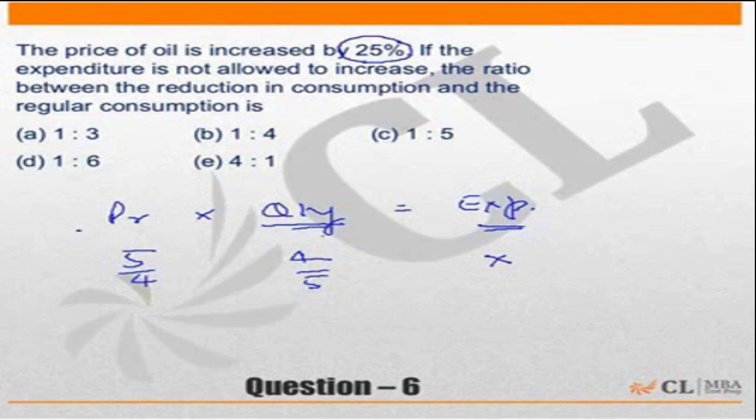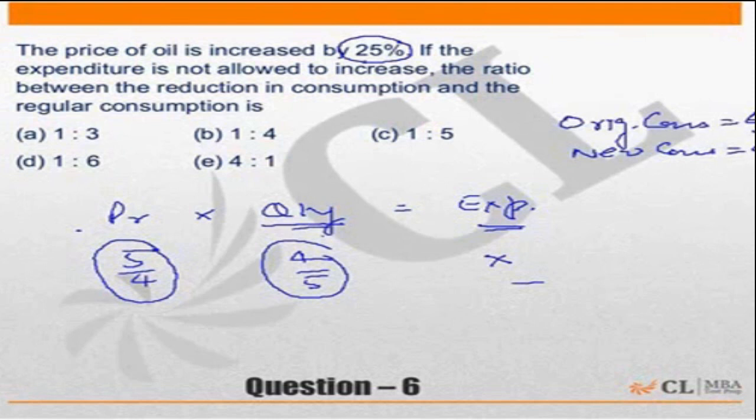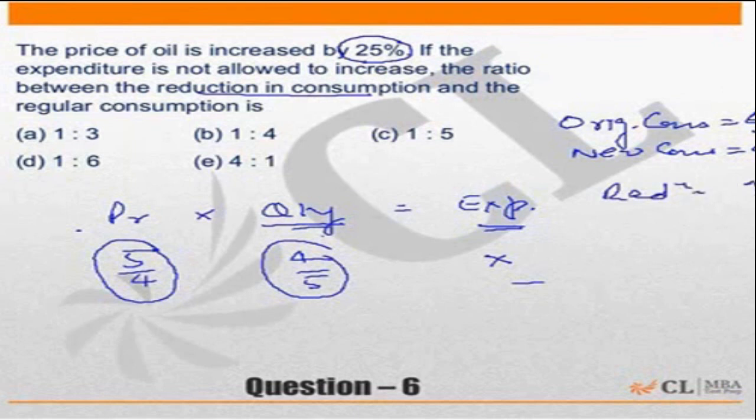So price increased by 25 percent, or price becomes 5 by 4 times. Expenditure remains constant, so quantity has become 4 by 5 times. That means if the original consumption was equal to 5, the new consumption is equal to 4. The ratio between reduction in consumption and regular consumption is equal to 1 unit reduction, and regular consumption is 5. So it's 1 is to 5.